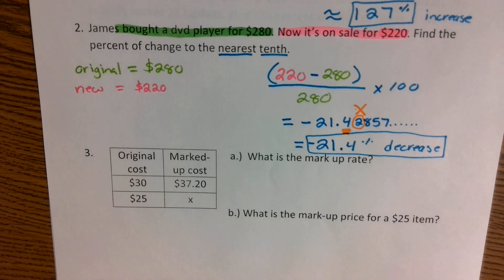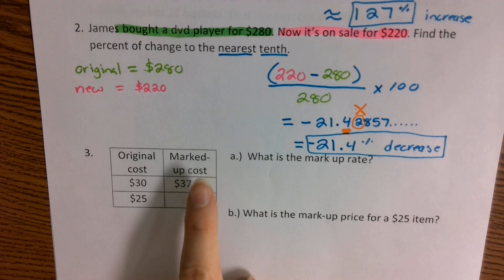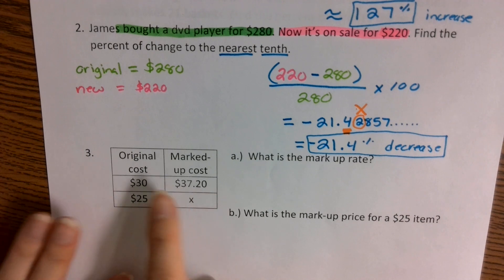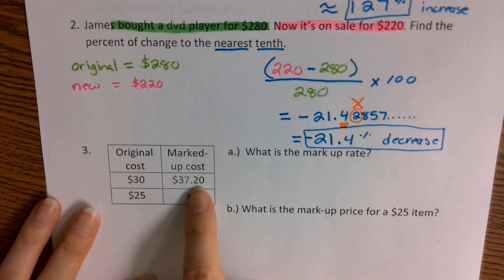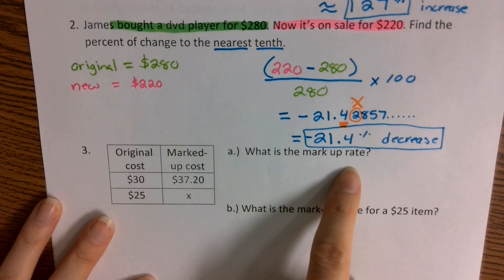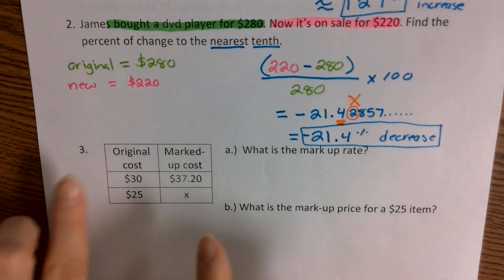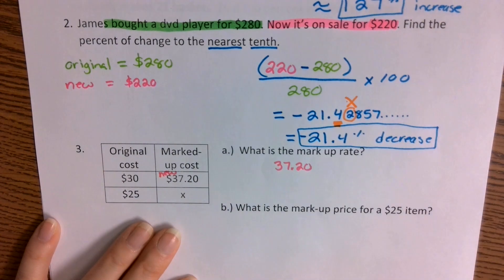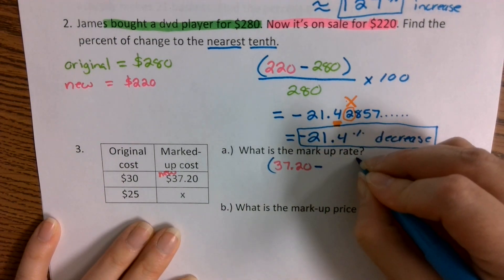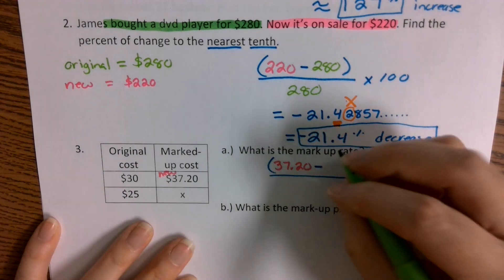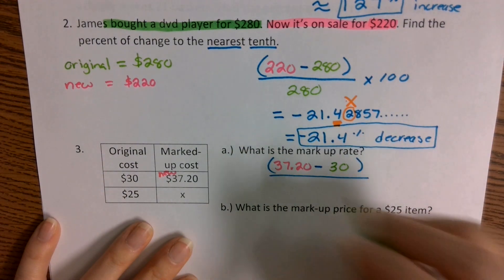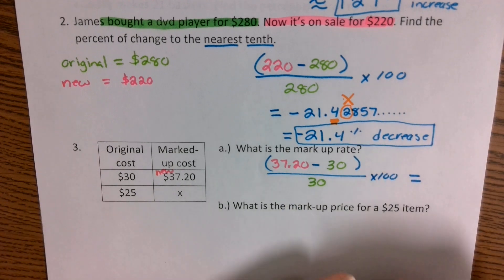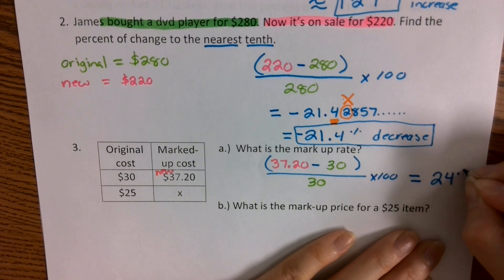For problem number three, you have an original cost and a marked-up cost. You went from $30 to $37.20 and we want to know the markup rate. We take our new value of $37.20, subtract the original $30, divide by the original $30, and multiply by 100. That gives us a markup rate of 24%.